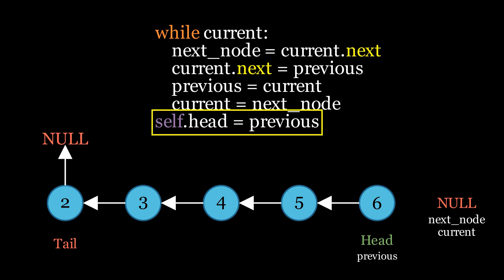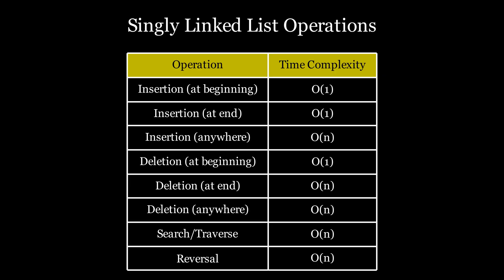Reversing the entire list is a linear time operation because it involves traversing the list once. Before moving to the doubly linked list, let's summarize all the operations and their time complexities. Insertion at the beginning and end is constant time. Inserting at a specific position takes linear time. Deleting from the beginning takes constant time, while deleting from the end or any specified index takes linear time. Searching, traversing, and reversing all take linear time. Space complexity is constant in every operation because no extra memory is needed beyond a few pointers.